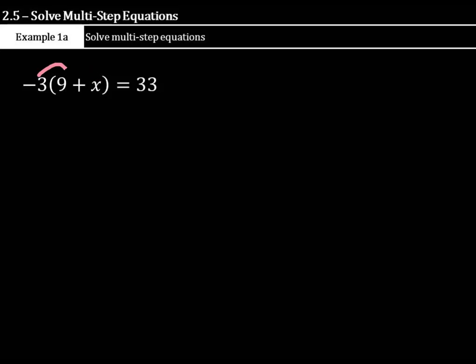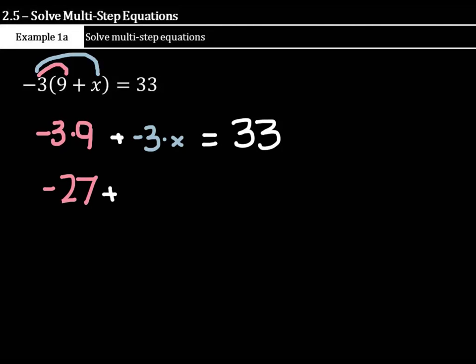And how we can show this, we have our negative 3 times the 9, and we'll have the negative 3 times the x. And I'll write the first one out to make sure we see what's going on, but you're not going to have to do this all the time. So the negative 3 times the 9 plus the negative 3 times the x, and that's going to equal 33.